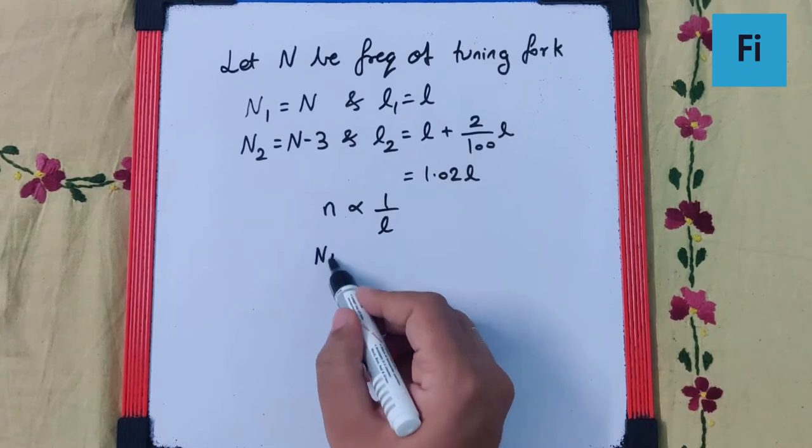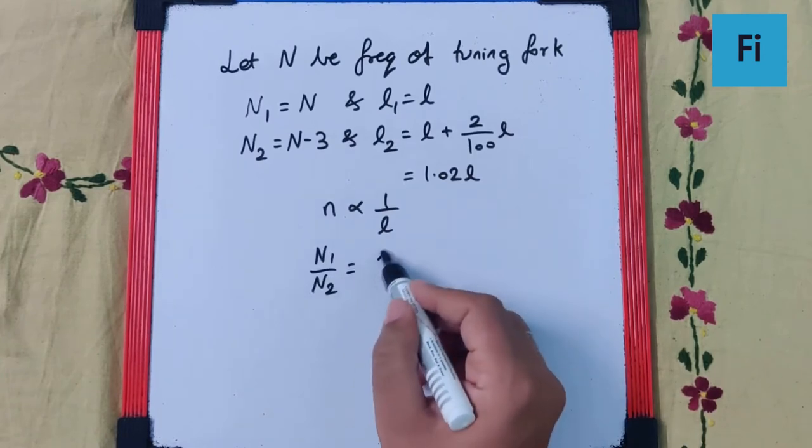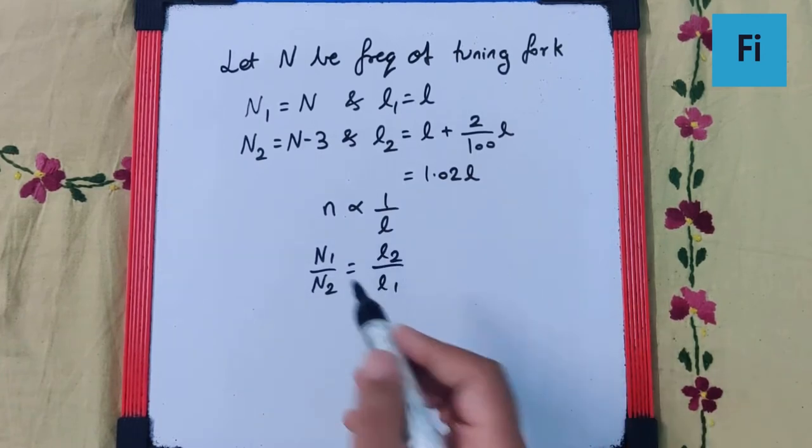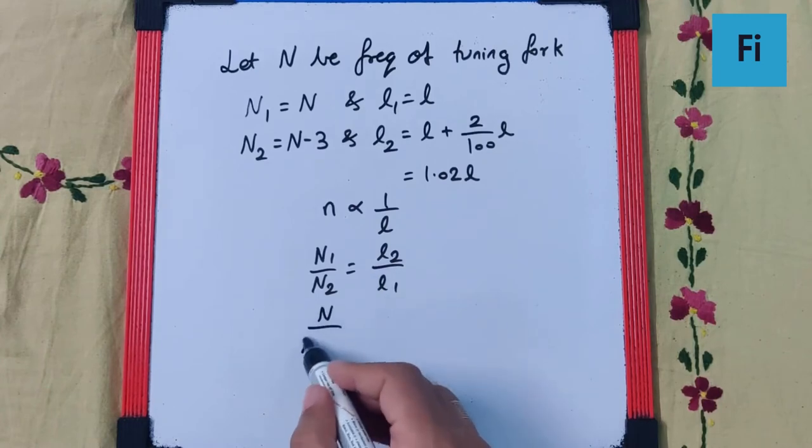therefore N1 by N2 should be L2 by L1. So this will be N upon N minus 3 is equal to